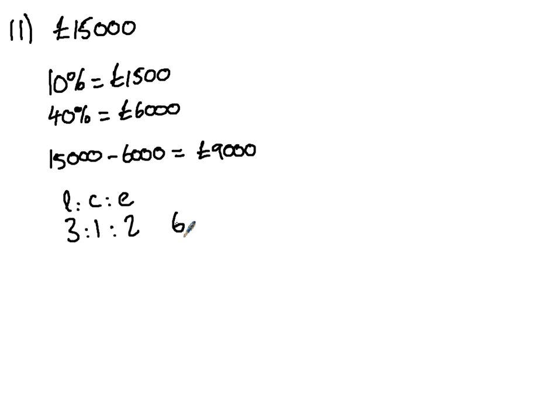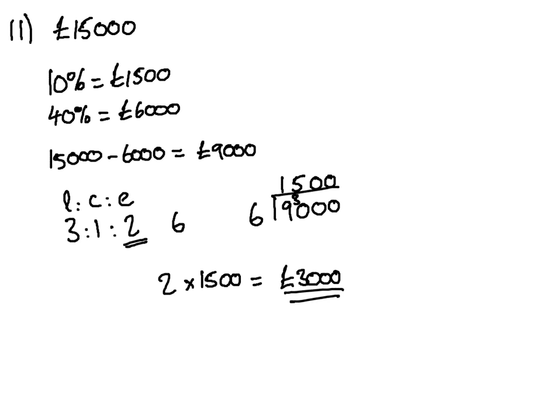We then divide, this is how many parts we've got, 6 parts into the 9,000. 6 into 9 goes 1 remainder 3, 6 into 30 goes 5, and then 0 and 0. We're wanting how much to spend on entertainment. One part is worth £1,500. Two parts, we just times it by 2. That'll give us £3,000. So £3,000 is what we're after on question 11.